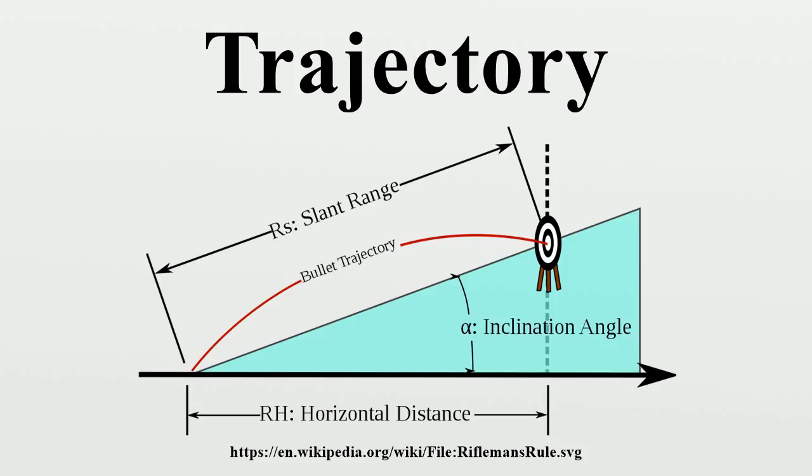Physics of trajectories: A familiar example of a trajectory is the path of a projectile, such as a thrown ball or rock. In a greatly simplified model, the object moves only under the influence of a uniform gravitational force field.